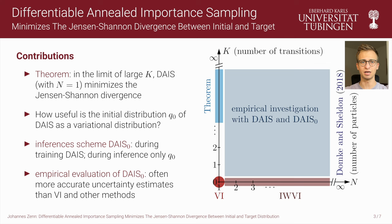Starting from this finding, we ask how useful is the initial distribution Q0 of DICE as a parametric approximation of the target distribution. The corresponding inference scheme, which we call DICE-0, is identical to DICE at training, but at inference only the initial distribution Q0 is used, omitting any MCMC steps. We empirically evaluate DICE-0 on various experiments, indicated with light blue in the figure. In the plot we find VI for zero transitions, importance-weighted VI for n greater than 1, as well as a limiting behavior by Domke and Sheldon for large n.